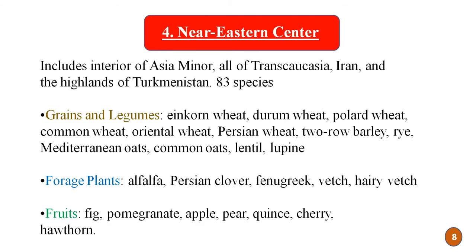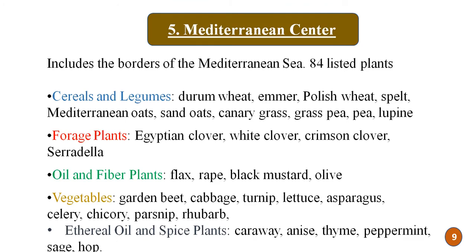The fifth center is the Mediterranean center, which includes the borders of the Mediterranean Sea and has 84 listed plants. We can see the different plants included in this Mediterranean center in the list here.